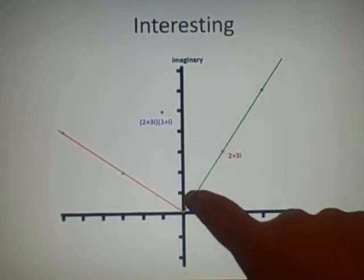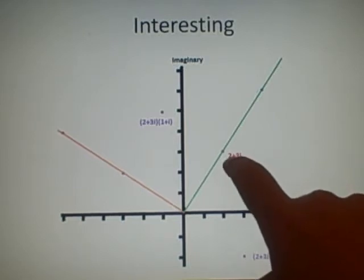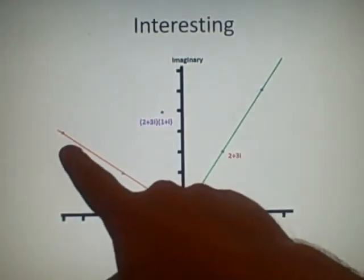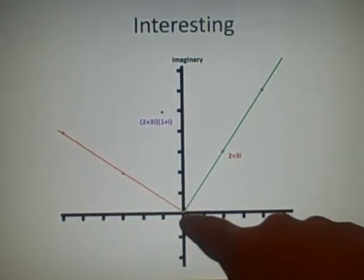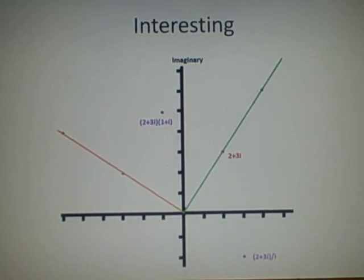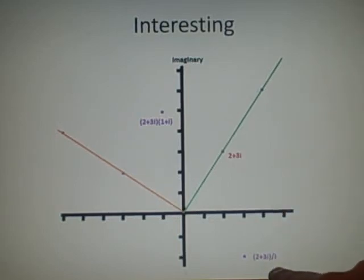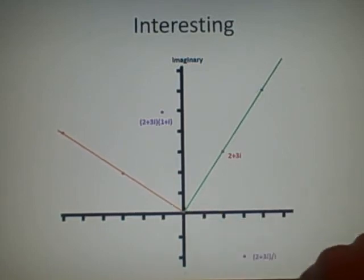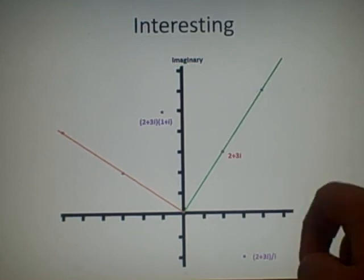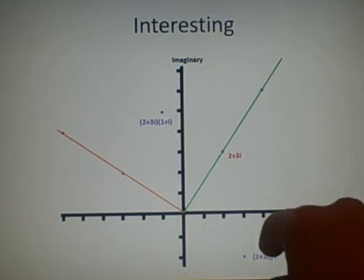If we multiply by 1 plus 2i we get this point here, and we've already shown that multiplying by 2i gives a point here — since there's no real part, just 2i. The only other thing I notice is what happens with division. If I divide by i, it goes down 1i, and dividing by 2i it goes further down. But if we divide by something like 1 plus 2i, we get something around here, and there's no real pattern I could find — but I just find this quite interesting.